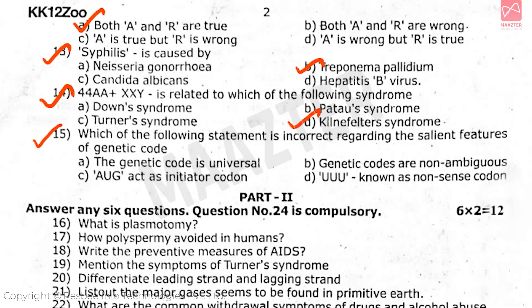Question 15: Which of the following statements is incorrect regarding the salient features of the genetic code? The answer is option D. This completes Part 1, the one-mark questions.